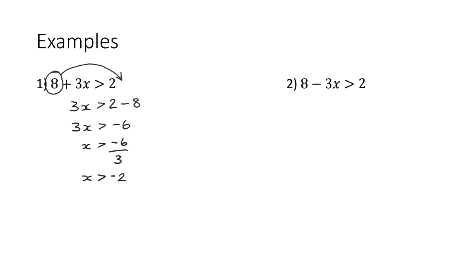If we look at the second example, we've got 8 - 3x > 2. So again, I'm going through the same process. The 8's on the wrong side, so it needs to come over here. So I've got -3x > 2. The 8's came over, so it's going to be subtract 8. So -3x > -6.